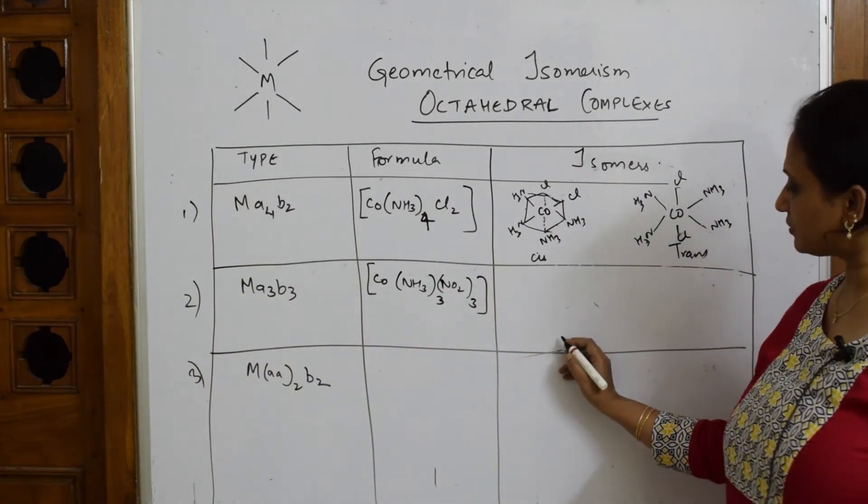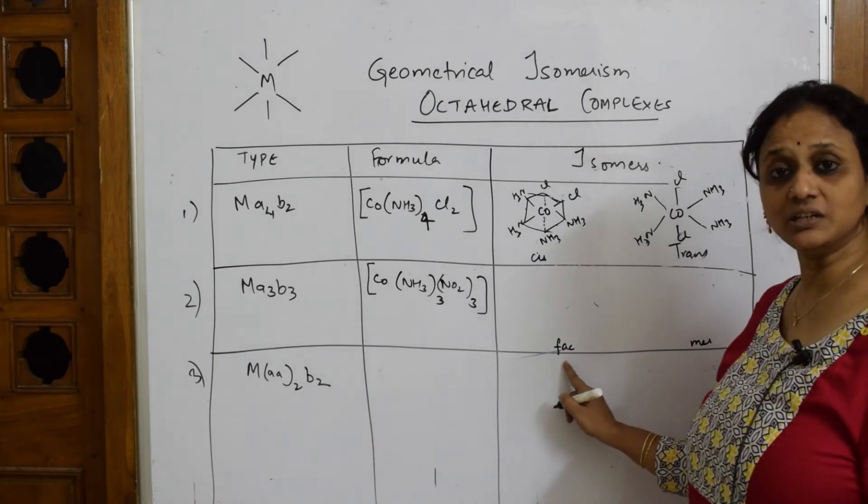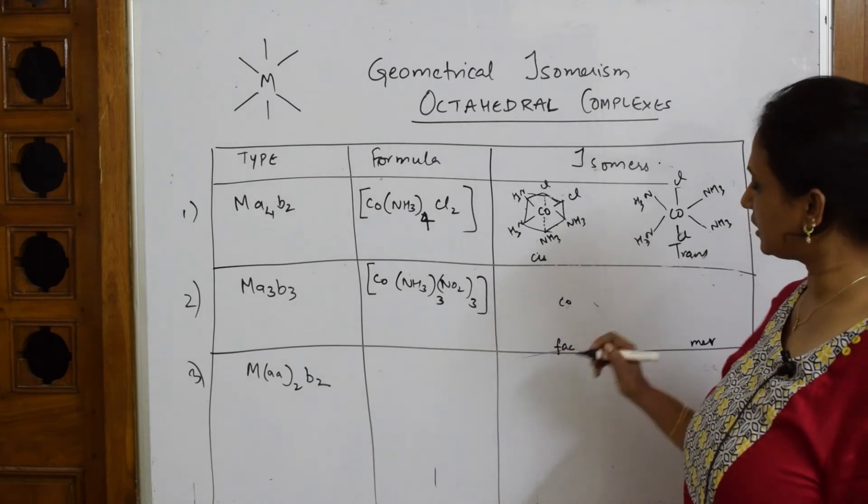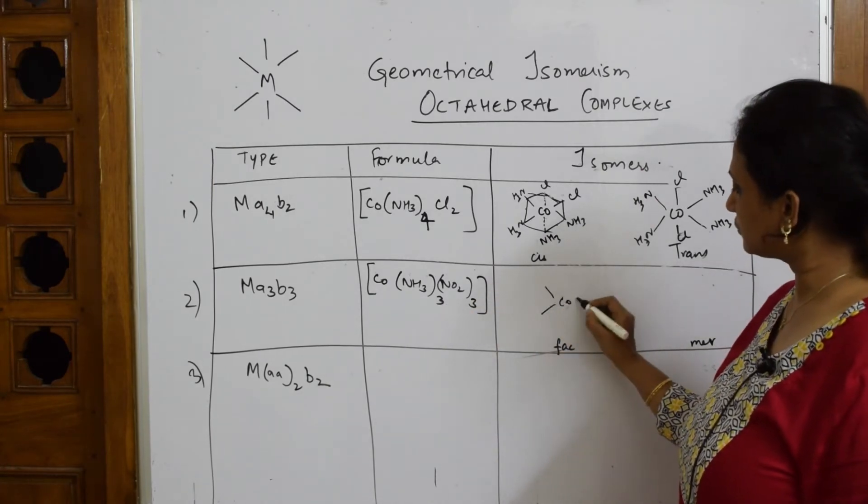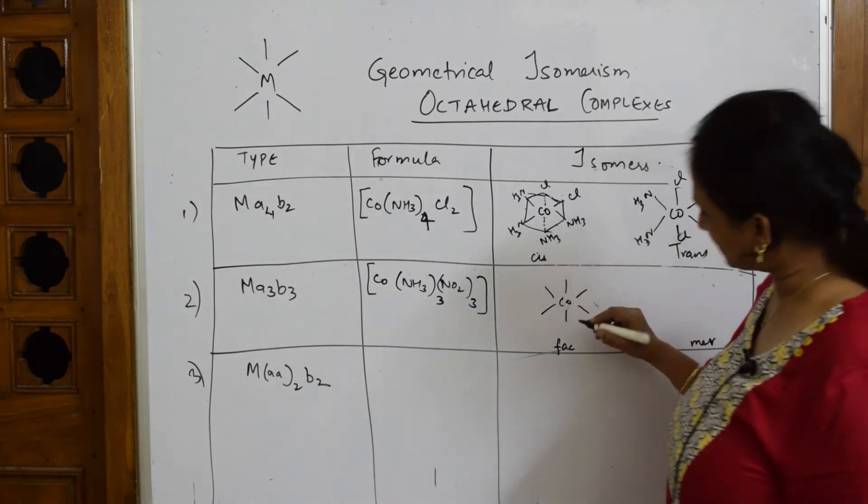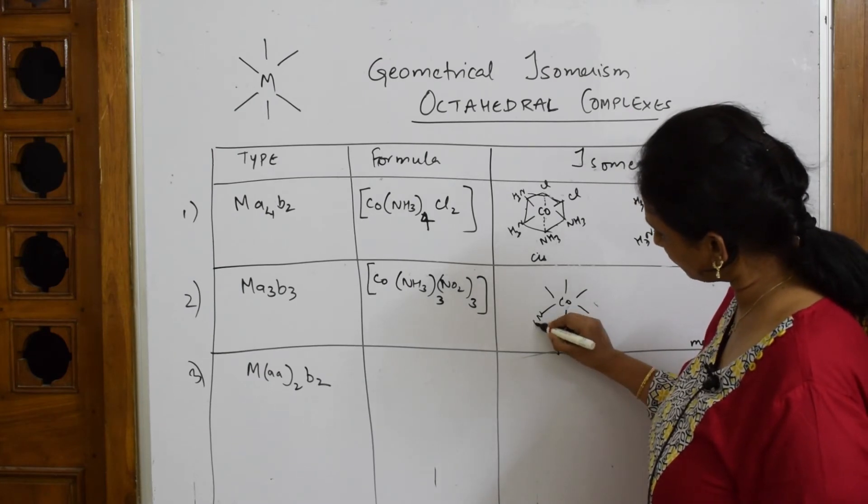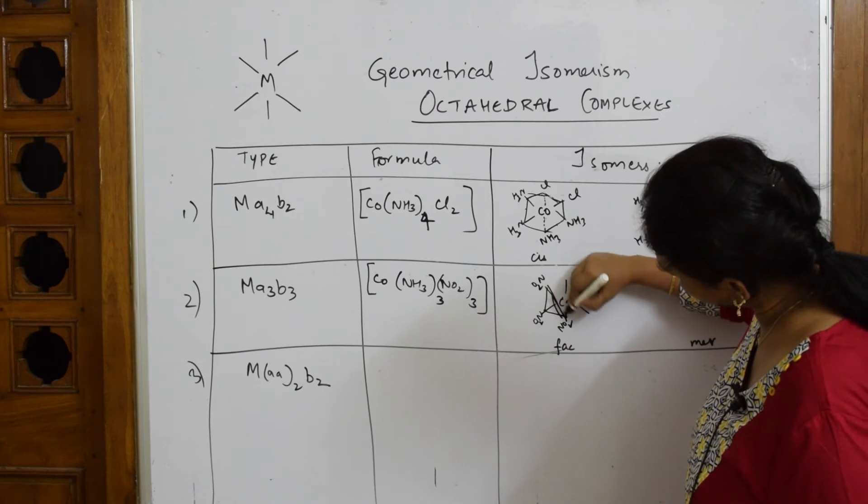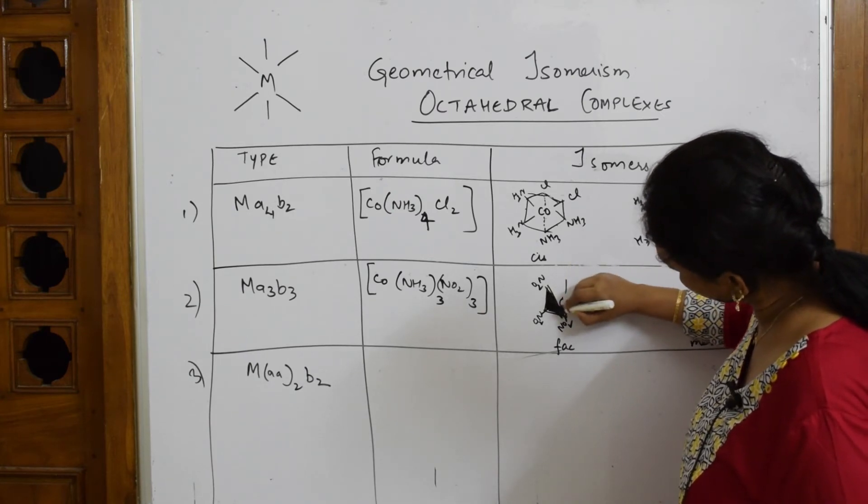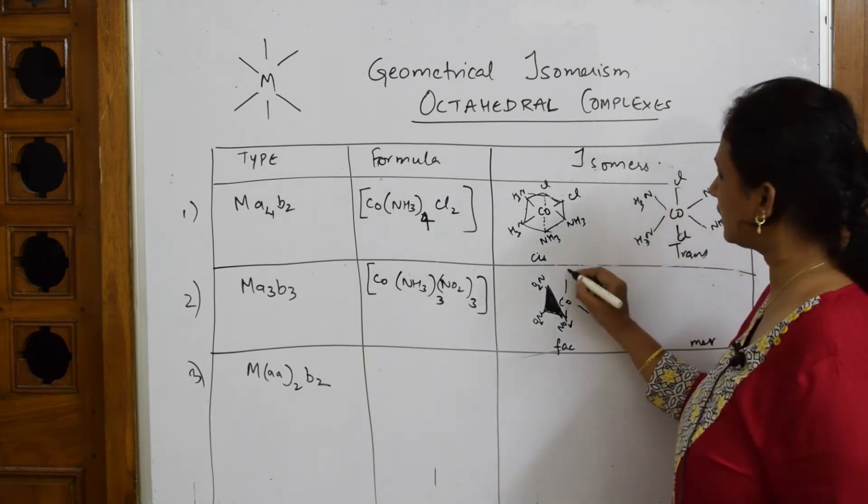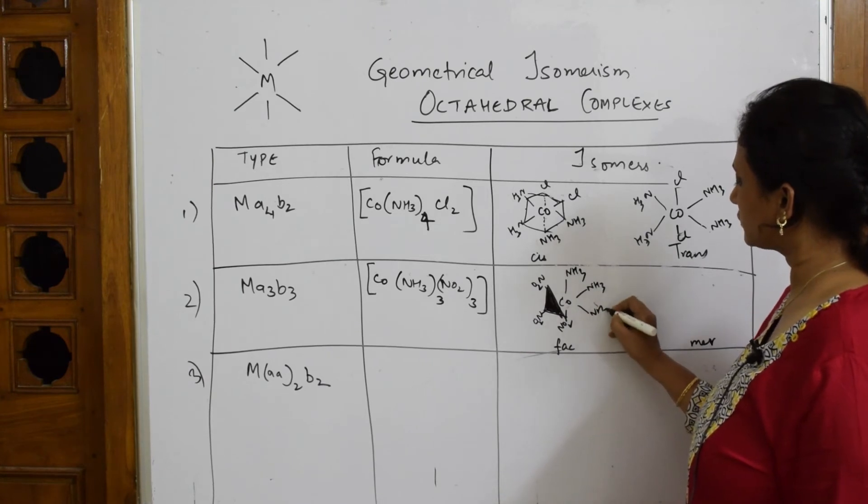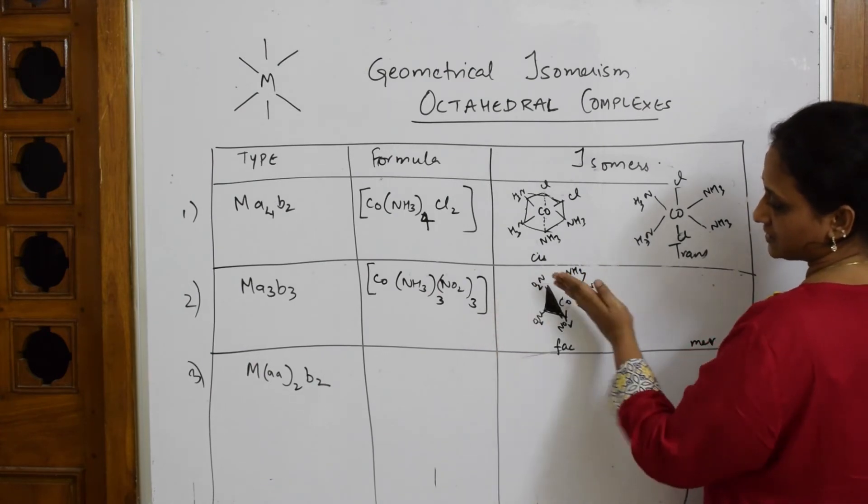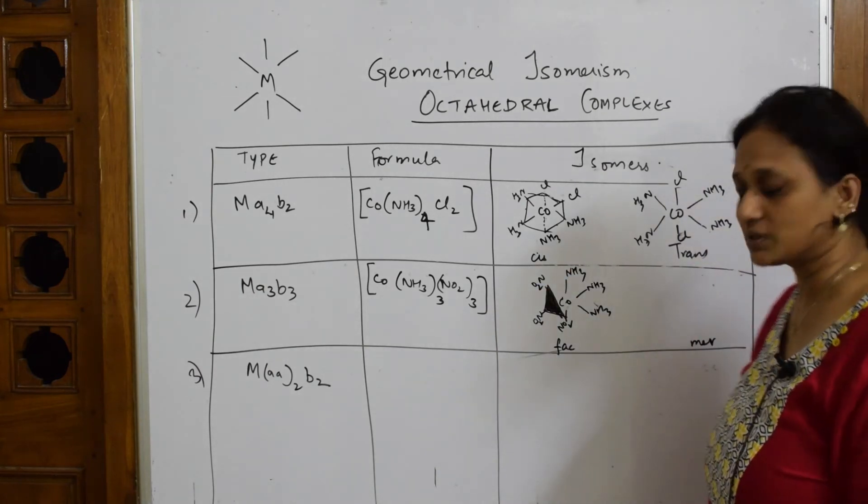So here we are going to learn two important things. One is called FAC and this is MER. This is facial isomer. This is meridional. MER means meridional isomer. How to draw? Draw the cobalt in the center. Ammonia 3 and nitrate is 3. So just write 1, 2, 3, 4, 5 and 6. Now observe carefully. NO2 here, NO2 here, NO2 here on this side. That means this whole plane, if I have to draw, just observe carefully, this thing, this whole thing. This is called when and the remaining are NH3, NH3, NH3. So when they are towards this side on the facial angle of the facial side of this cobalt, so all together they are on one side. Just see, all NO3 is on one side, NH3 is on one side. It is called facial isomer.